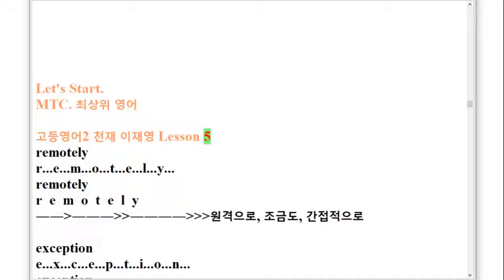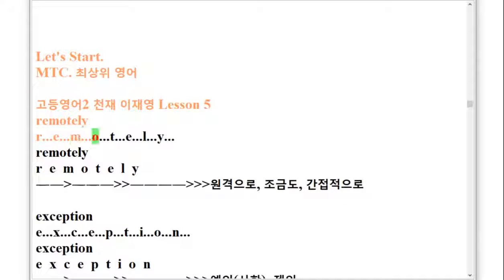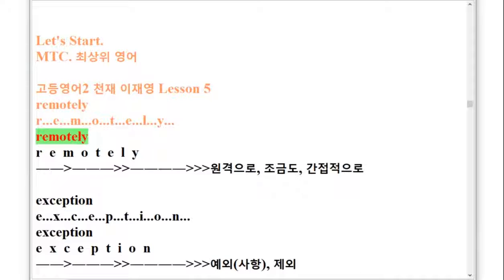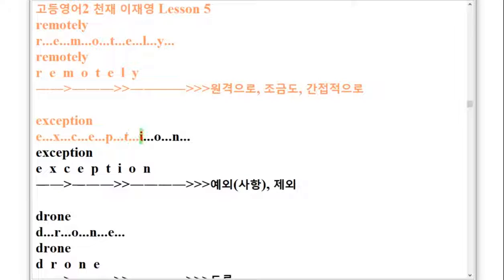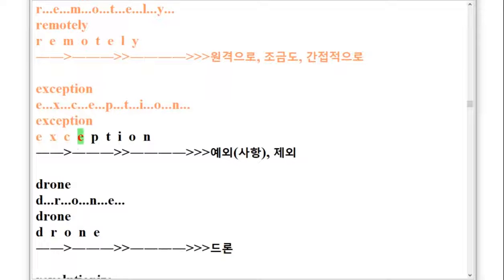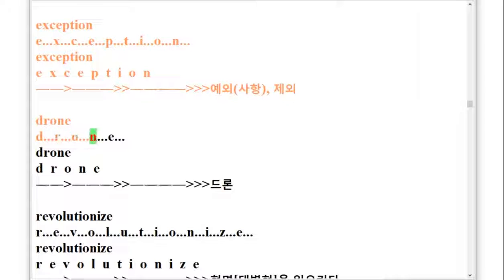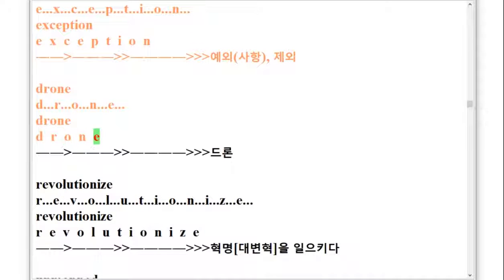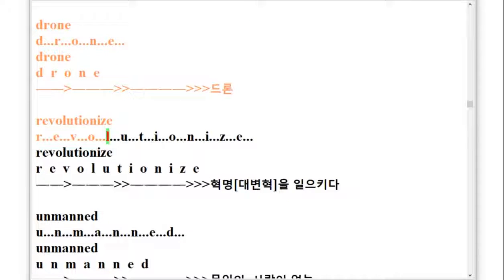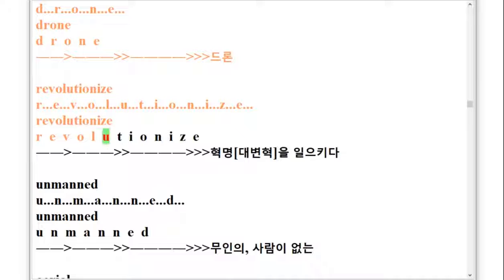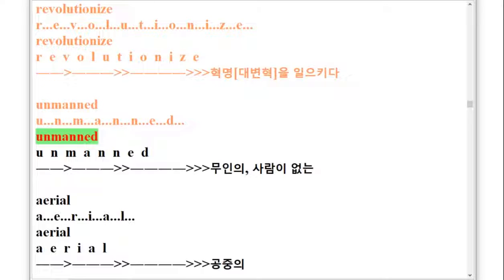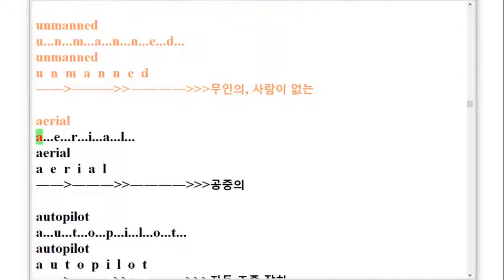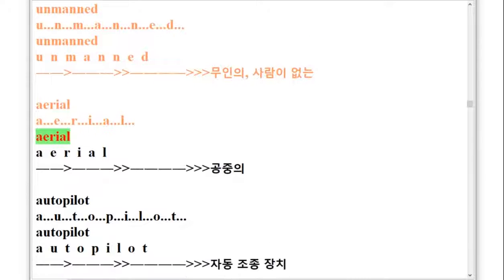MTC 2 Lesson 5 — Remotely. Remotely. Exception E-X-C-E-P-T-I-O-N. Drone D-R-O-N-E. Revolutionize R-E-V-O-L-U-T-I-O-N-I-Z-E. Unmanned U-N-M-A-N-N-E-D. Aerial A-E-R-I-A-L.